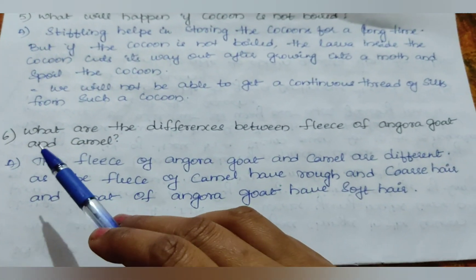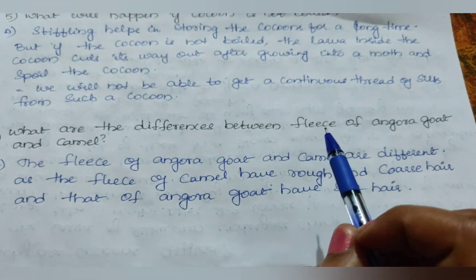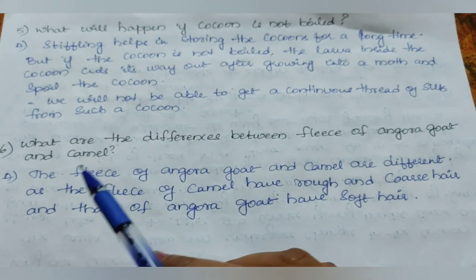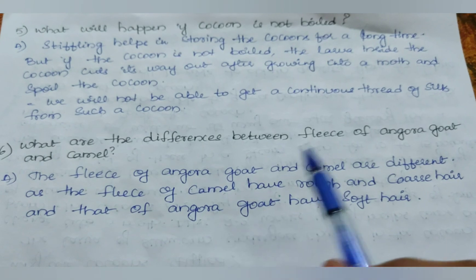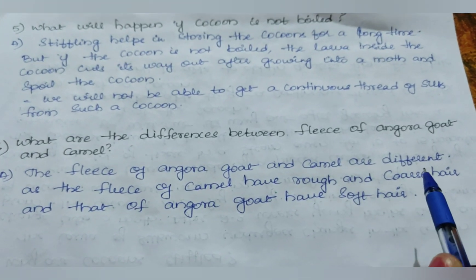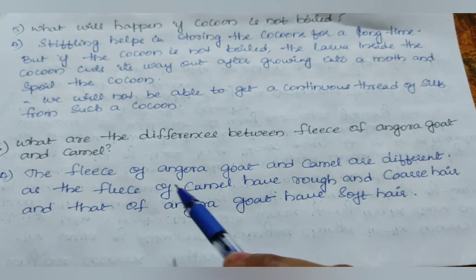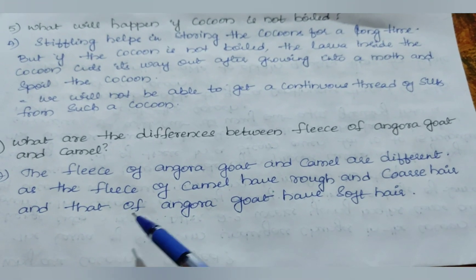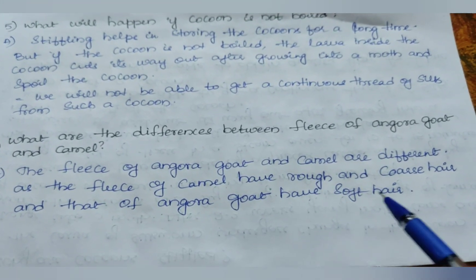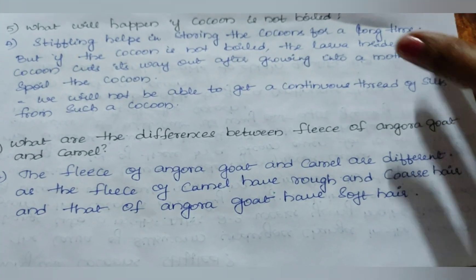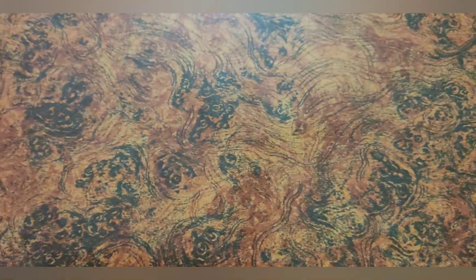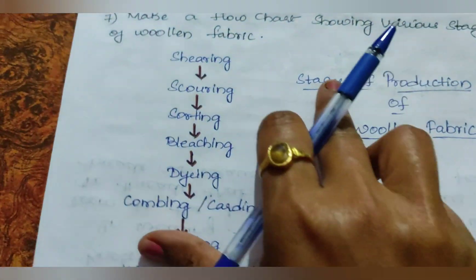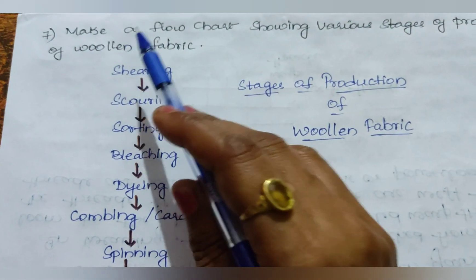Sixth question: What are the differences between Angora goat and Camel? The fleece of Angora goat and camel are different — the fleece of camel has rough and coarse hair, whereas that of Angora goat has soft hair.